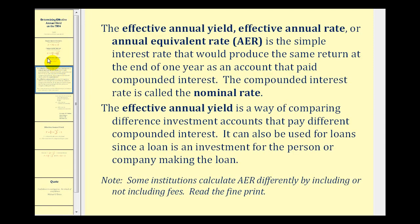The effective annual yield, also called the effective annual rate or annual equivalent rate, is the simple interest rate that would produce the same return at the end of one year as an account that paid compounded interest. The compounded interest rate is called the nominal rate.